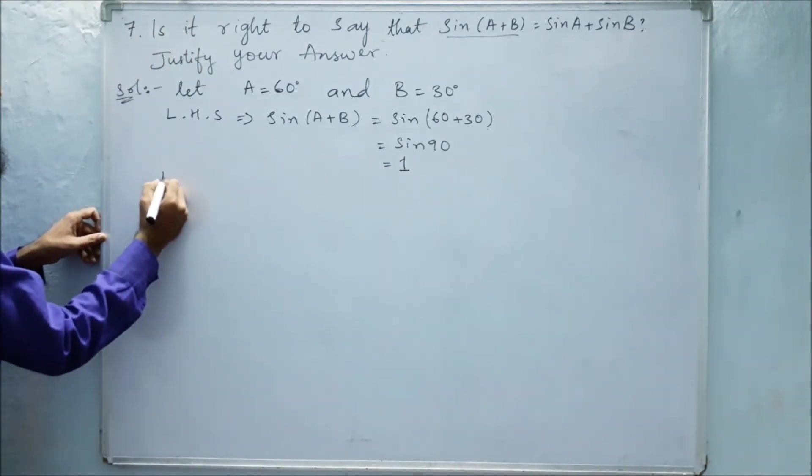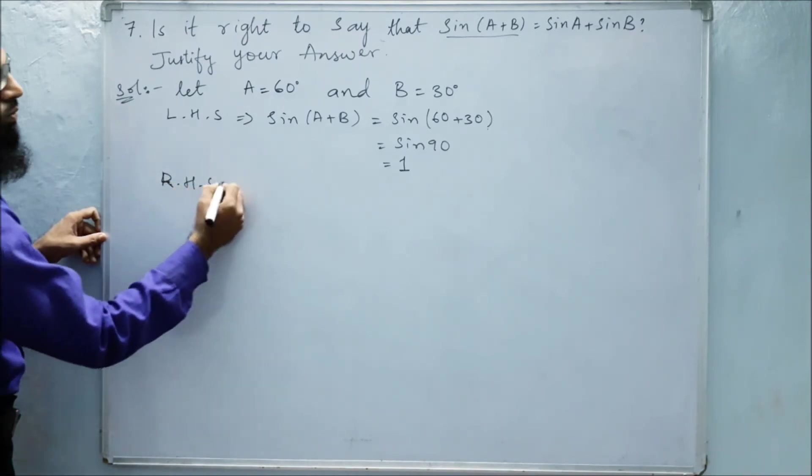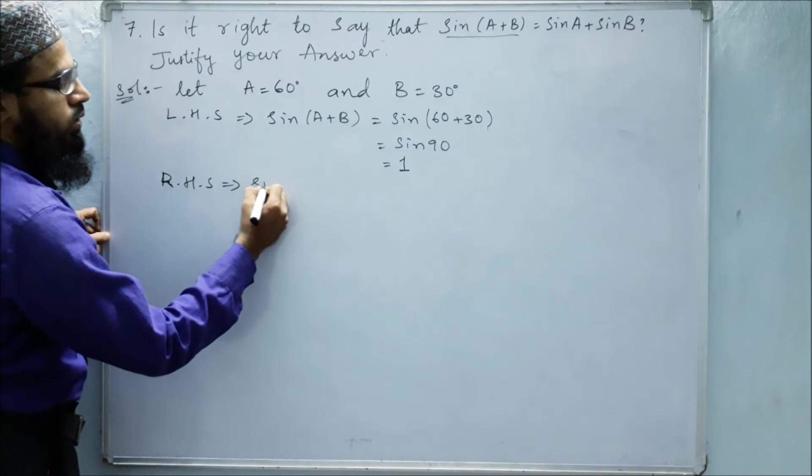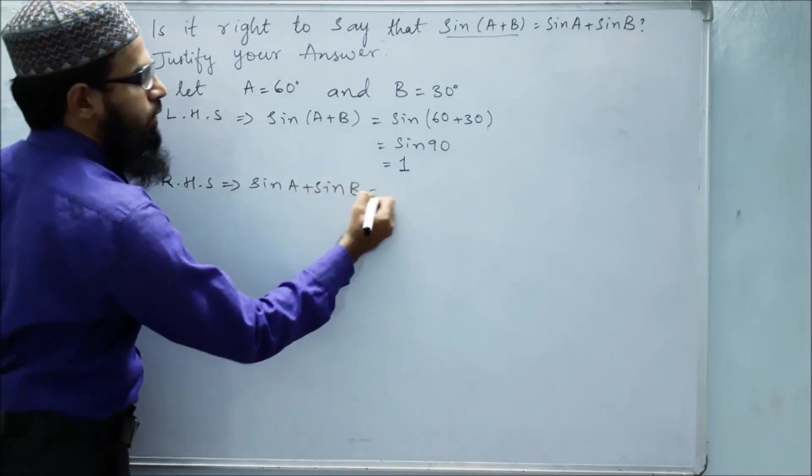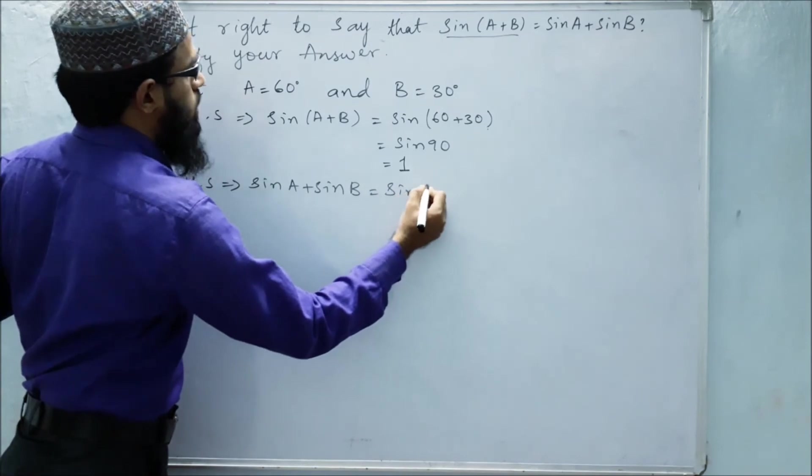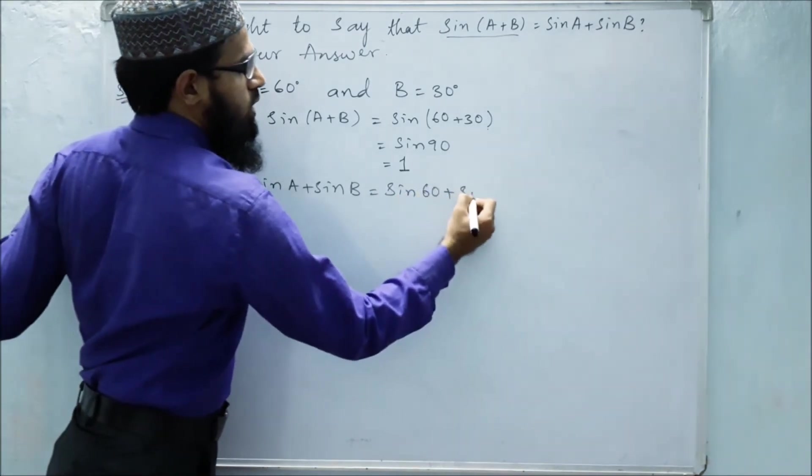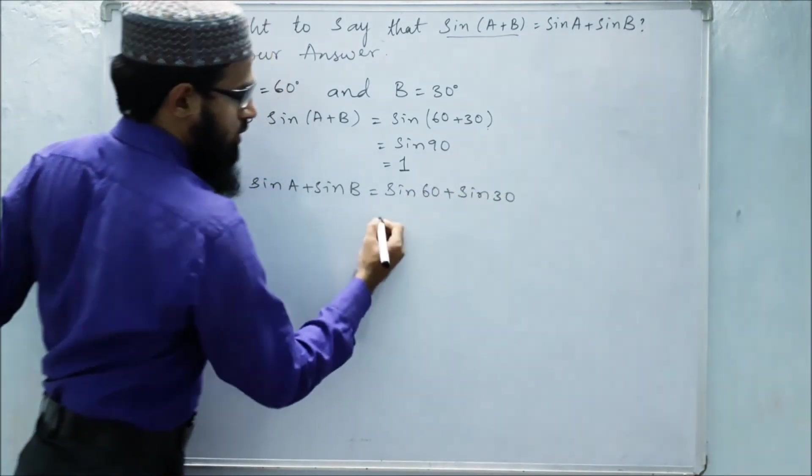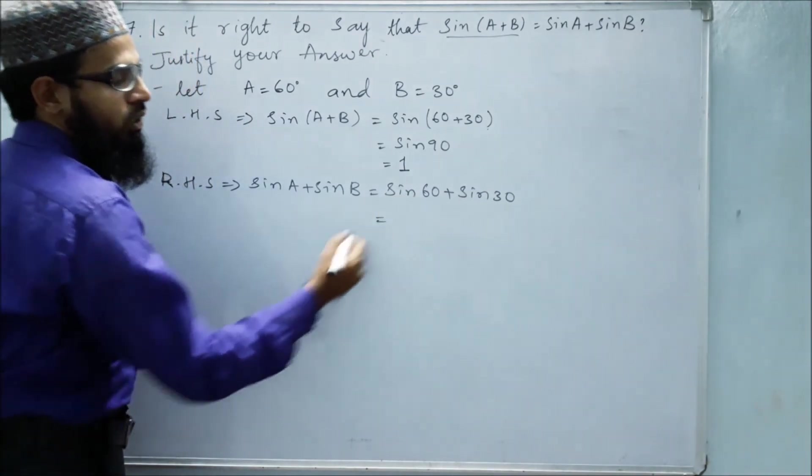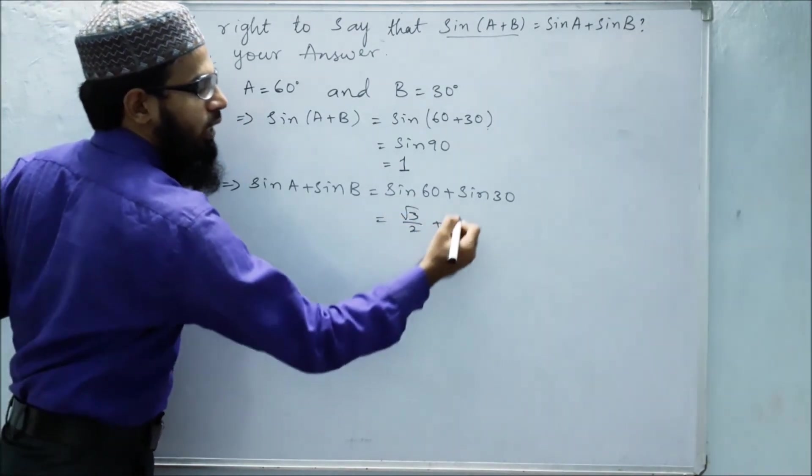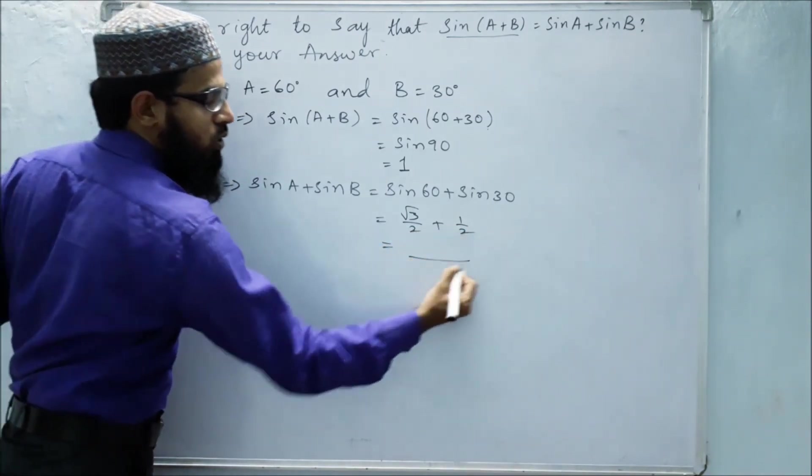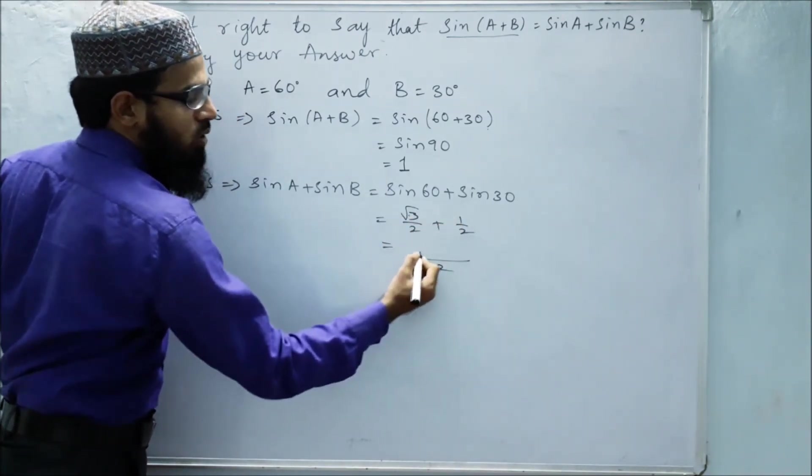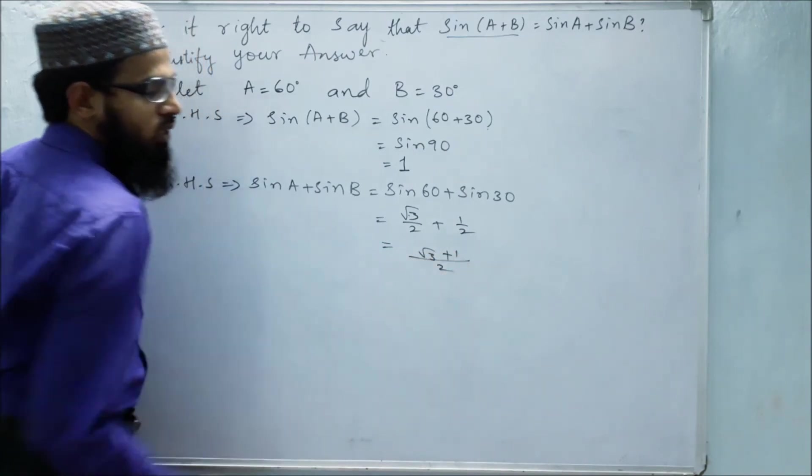Next, let us take RHS. Sin A plus sin B. Sin A is 60 degrees plus sin B is 30 degrees. Sin 60 is root 3 by 2. Sin 30 is 1 by 2. The LCM of 2 and 2 is 2. Root 3 plus 1. So root 3 plus 1 by 2.